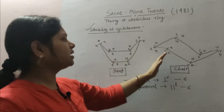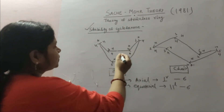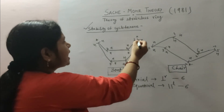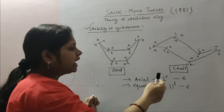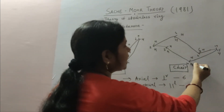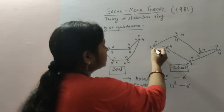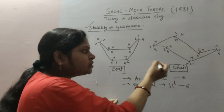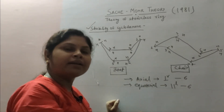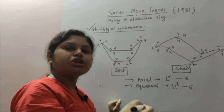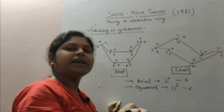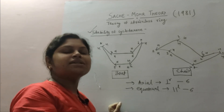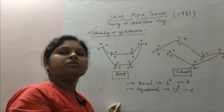This stability is explained by Sachse and Mohr. In the boat form, carbons 3, 2, 5, and 6 lie in the same plane, but carbons 1 and 4 lie in a different plane. In the chair form, carbons 3, 1, 6, and 4 exist in the same plane, but the 2nd carbon and the 5th carbon lie in different planes. In both figures we see that all the carbons do not lie in the same plane, and when all the carbons do not lie in the same plane, there is retention of the normal tetrahedral angle of 109 degrees 28 minutes. When the normal tetrahedral angle is retained, the compound is stable in nature, and this is the reason why cyclohexanes cannot give ring opening reactions.